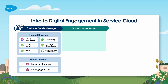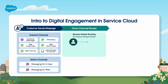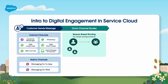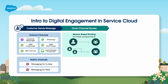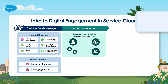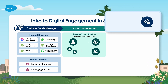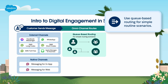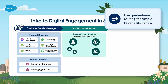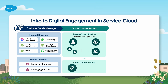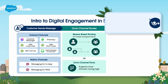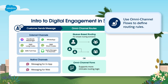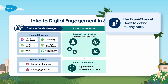The beauty of Salesforce digital engagement is that no matter what messaging channel customers use, their cases are handled by the route you've set up in Service Cloud to assign messages to queues, bots, or agents. We recommend using queue-based routing for simple, routine scenarios. If your needs are more complex, use Omni-Channel flows to define routing rules and dynamically route messages to the most qualified available agent.